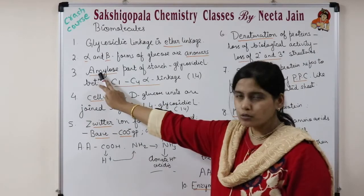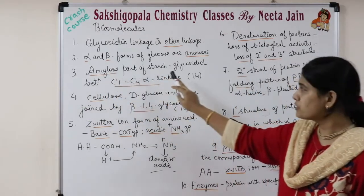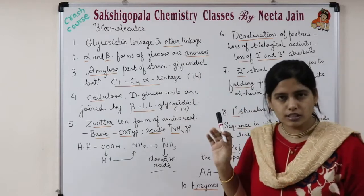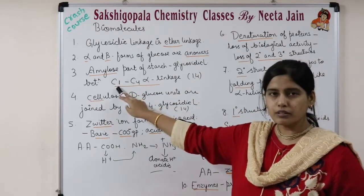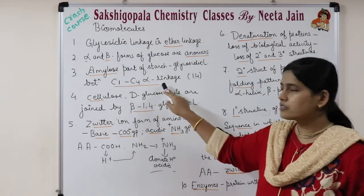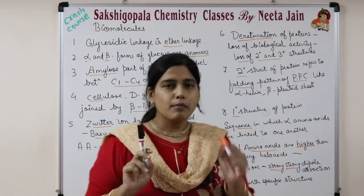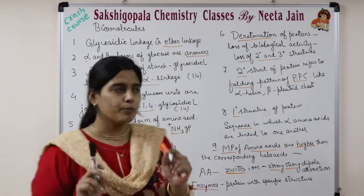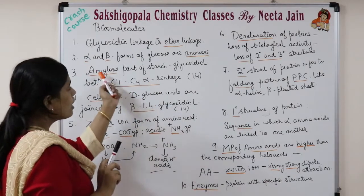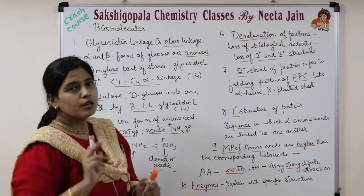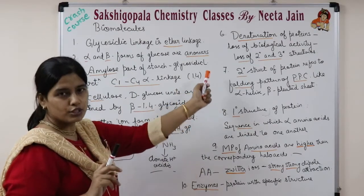Third is the amylose part of starch. Amylose has a glycosidic linkage between carbon-1 and carbon-4, and it is an alpha linkage. Remember the mnemonic: A for amylose, A for alpha. So amylose will have an alpha linkage between C1 and C4. Remember: 1 for 1-4.